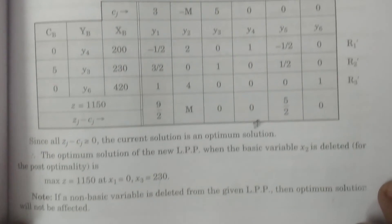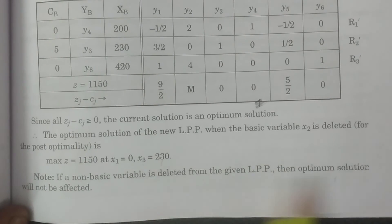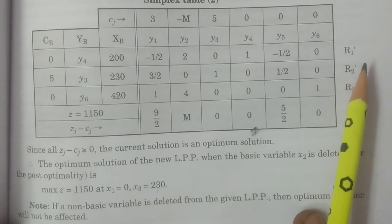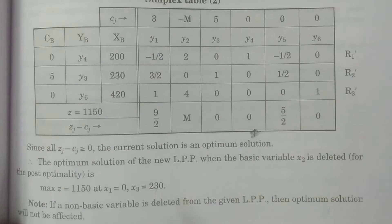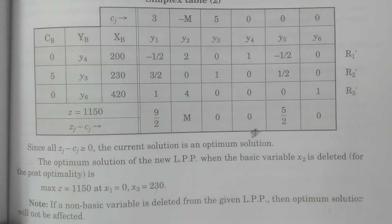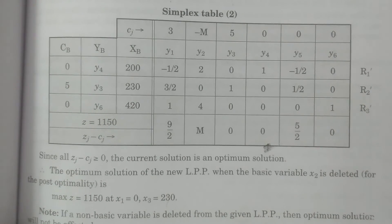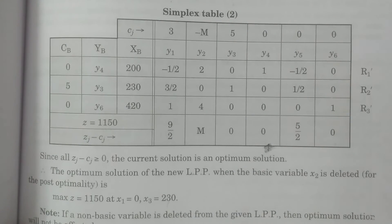To clarify: if a non-basic variable is deleted, then the optimum solution will not be affected — that is very simple, you can write it in one line. But since x2 was a basic variable, changes took place and we had to follow this procedure. If a basic variable is deleted, you have to do this particular procedure. If a non-basic variable is deleted, the optimum solution remains the same and will not be affected. This is the procedure for deletion of a variable in the original LPP. Thank you very much.